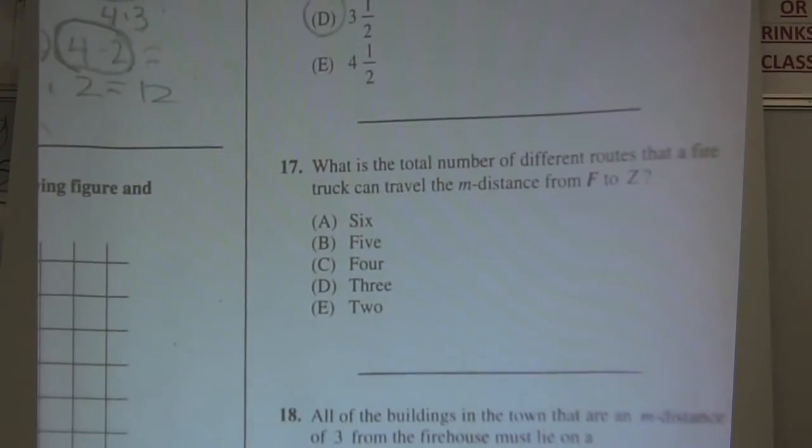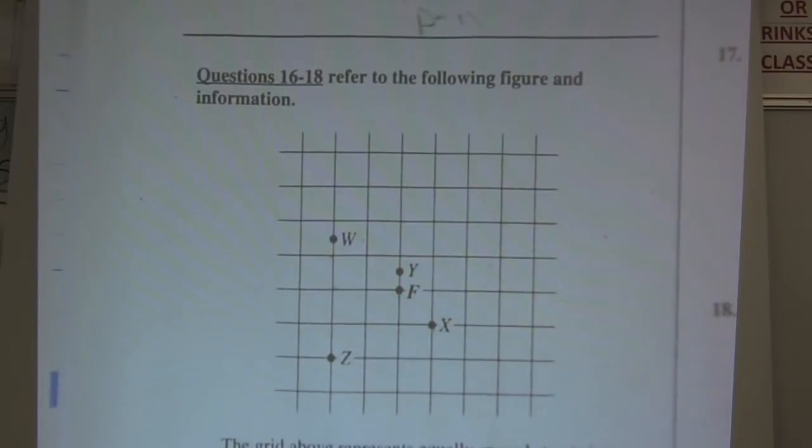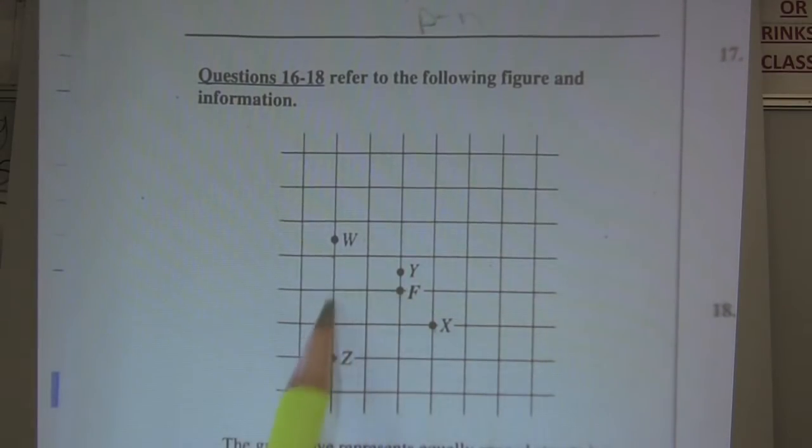All right, 17. What is the total number of different routes that a fire truck can travel the m-distance from F to Z? So how many different ways from F to Z? Let's go count them. Here's one, I'm going to put a little tally mark over here. Here's another over, down, over, down. There's another one.